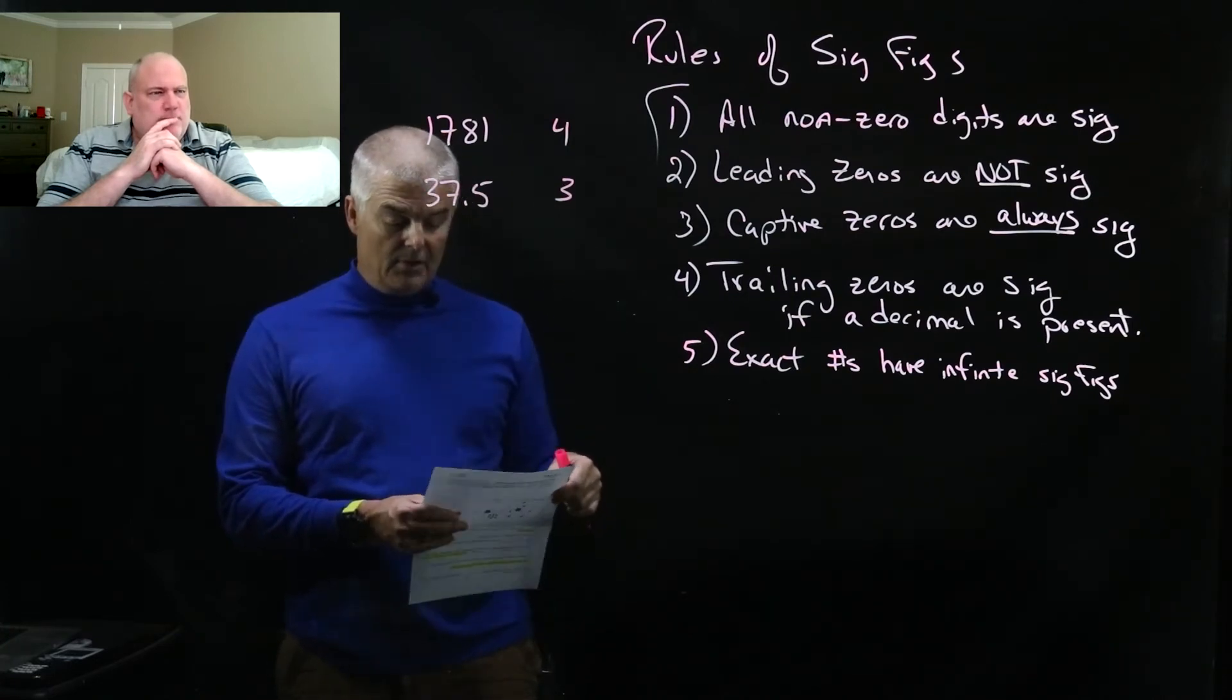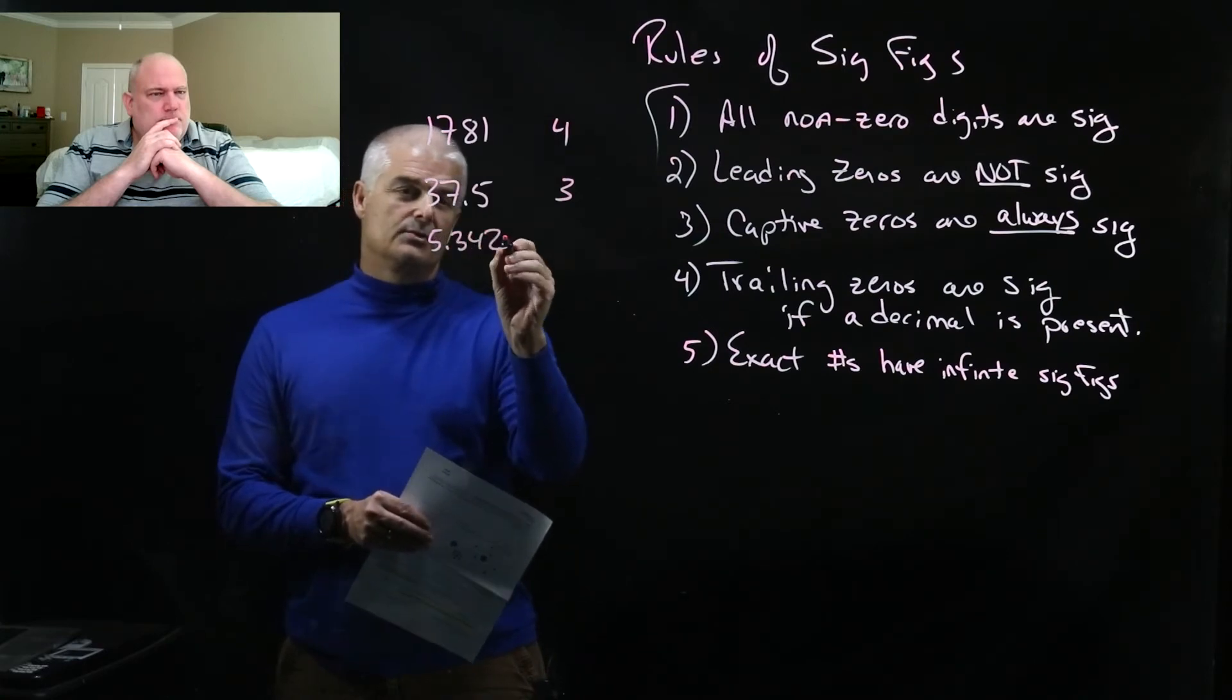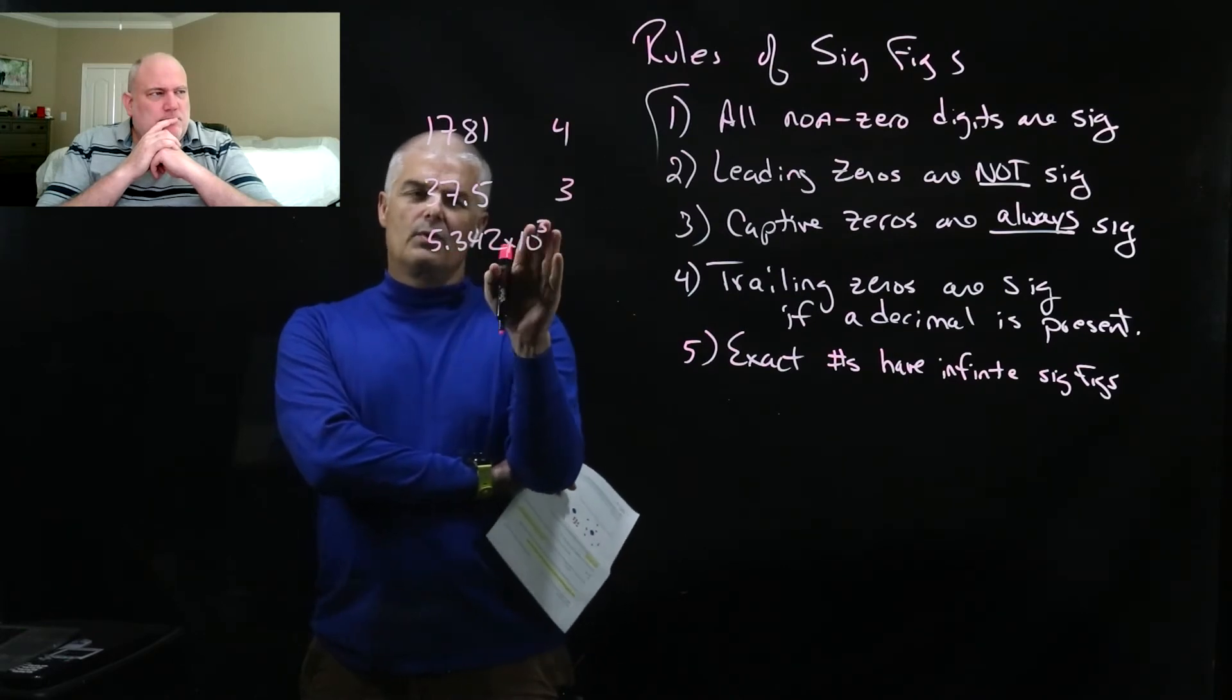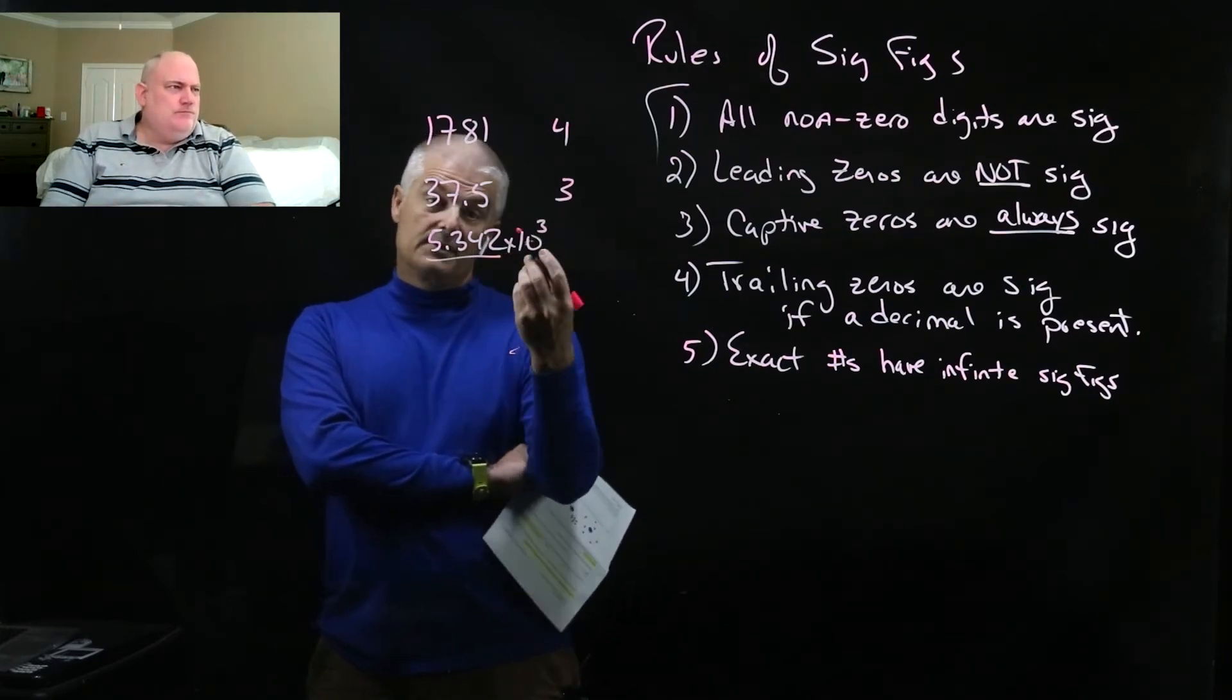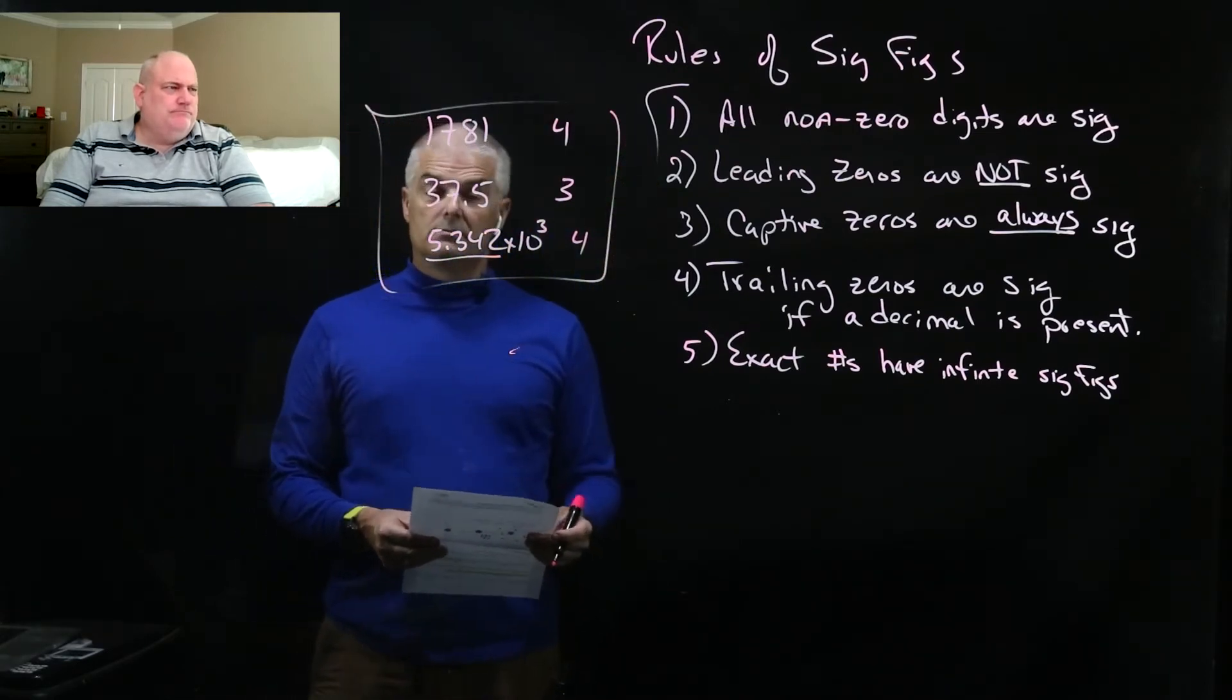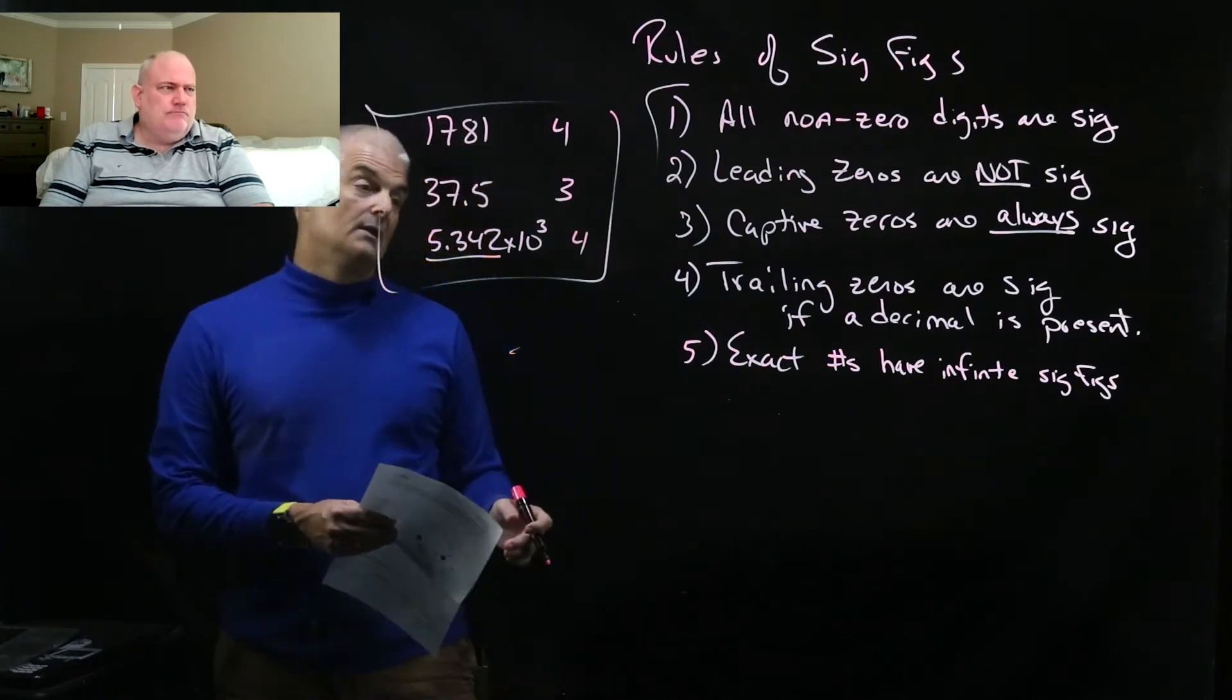Or if we have something that's exponential, 5.342 times 10 to the third. Now this is a little tricky. You have this third here, but we just ignore. If we've got something in scientific notation, we just ignore that. So that's just going to be the number of digits there. They're all non-zero, so that's four significant digits. Make sense? Not in this case because there are no zeros.